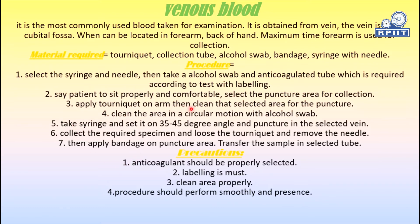Ask the patient to sit properly and comfortably, then select the puncture area for collection. Apply the tourniquet on the arm, then clean the selected puncture area using an alcohol swab. The alcohol swab should be applied properly to clean the area before puncture.